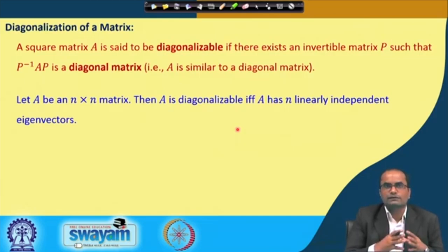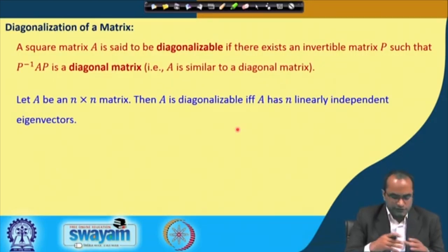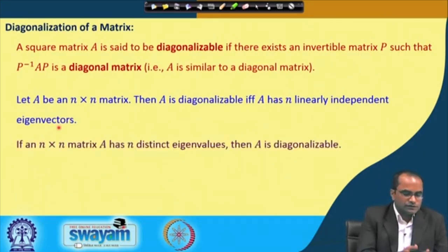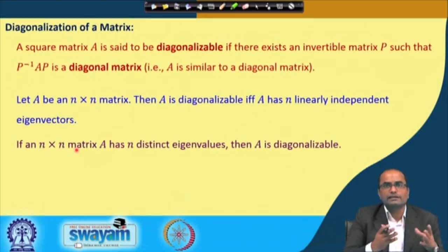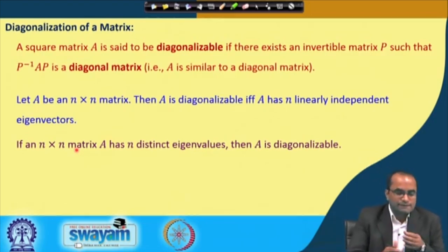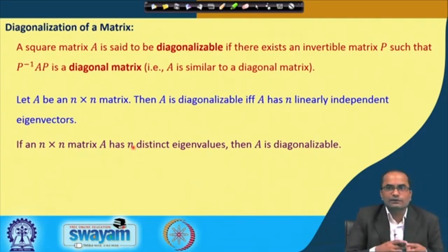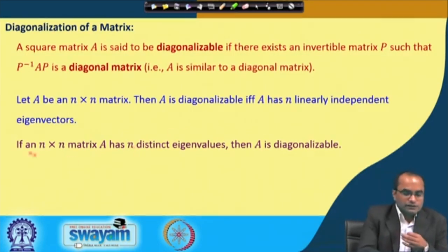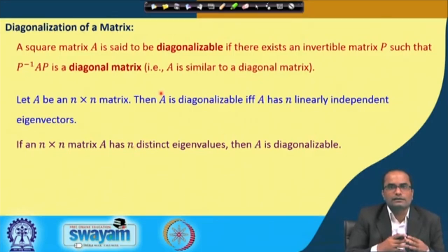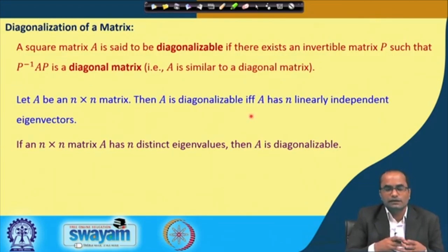That is the main result of this lecture. We will not go through the formal proof, but will see with many examples how this works. Another consequence: if A is an n×n matrix with n distinct eigenvalues, then A is also diagonalizable, because distinct eigenvalues always yield linearly independent eigenvectors.